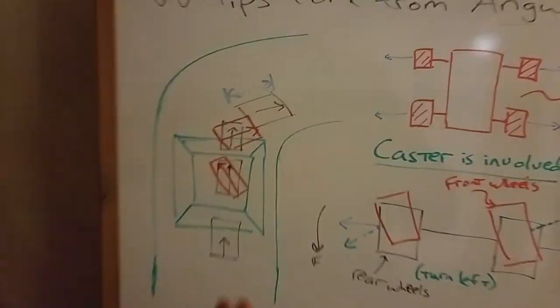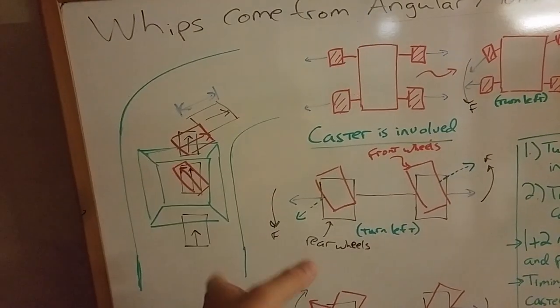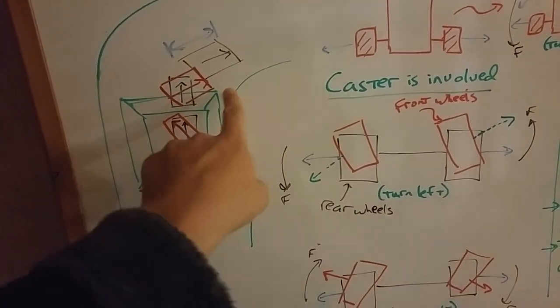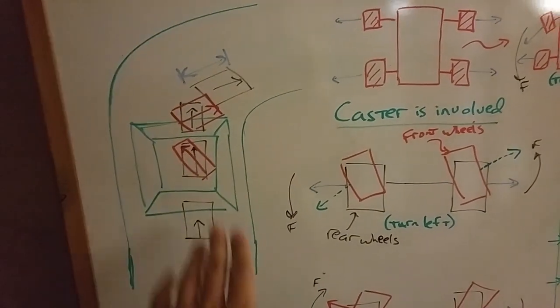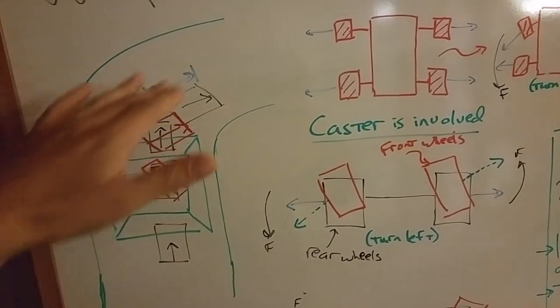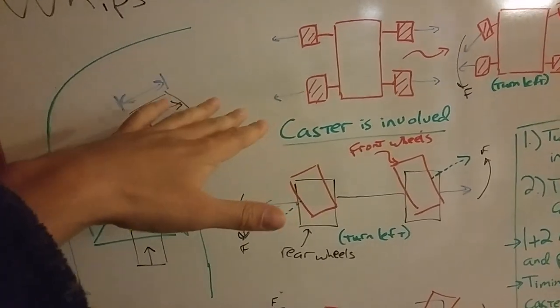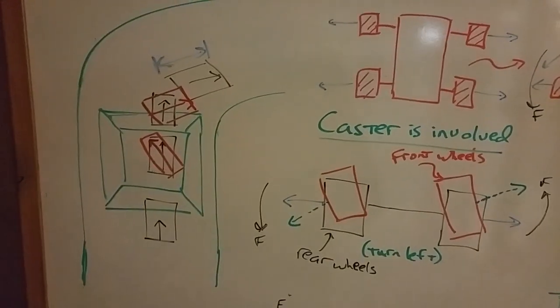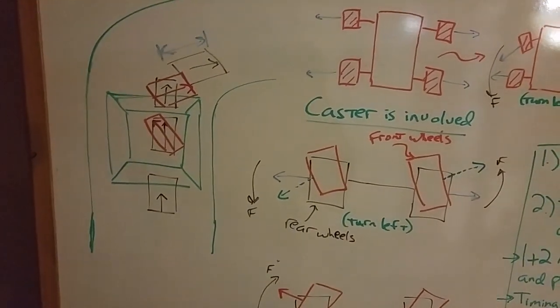Okay, so essentially what happens is on some track layouts, you'll have a landing to a jump. So this here is a tabletop jump, for example, and the landing goes right into a turn. In this case, it's a right-hand turn. So what a classical approach would be, a classical racing line would be, is that you would